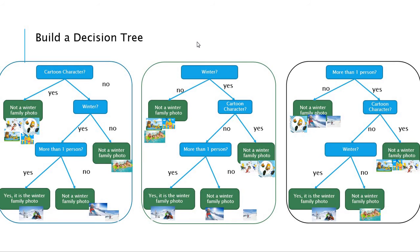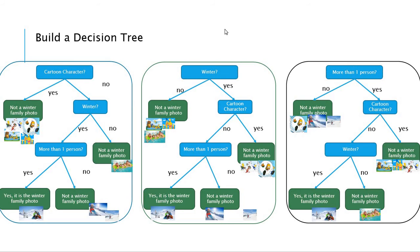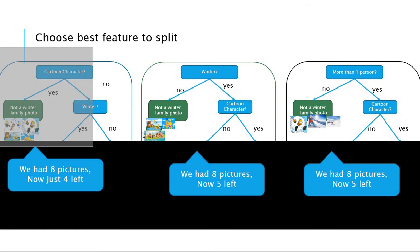At the first step, we need to decide which attribute to use first to split the data. We have cartoon, winter, and more than one person. Which attribute is most effective to build the decision tree? If we use cartoon characters, we split out four cartoon characters, leaving four remaining. If we use winter, we split out three, leaving five remaining. If we use more than one person, the remaining is also five. So the cartoon character attribute splits out the most unnecessary data, making it the best choice for the first split.